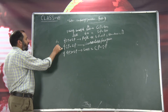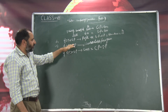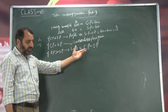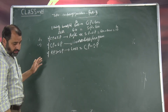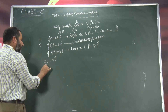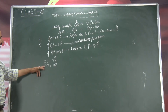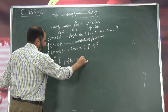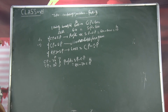So yeh teen conditions aapko yaad rakhni hongi: agar CP less than SP — cost price less than selling price — to wahaan profit hai. Agar cost price selling price ke barabar hoga, to wahaan no loss no gain. Agar cost price greater hoga selling price se, to wahaan loss hoga. Loss is equal to CP minus SP. For example, kisi bhi cheese ka cost price hai 72 rupees, aur selling price hai 80 rupees. Yahan CP is less than SP, isliye yahan profit hai. Profit is equal to SP minus CP — 80 minus 72 — yahan eight rupees profit aya hai.